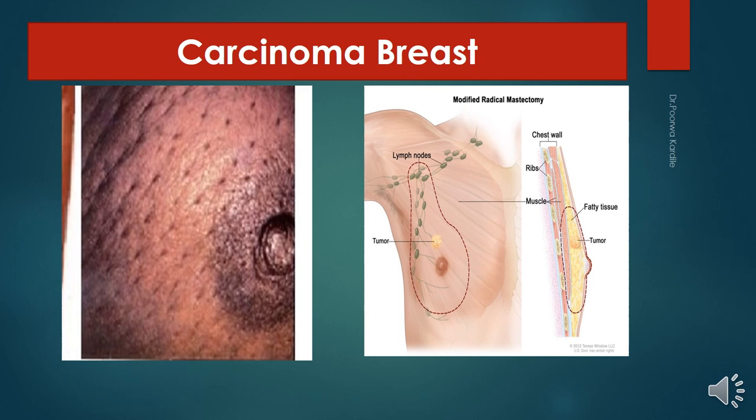Infiltration and fibrosis of lactiferous ducts causes the nipple to retract. Obstruction of superficial lymph vessels by cancer cells produces edema of the skin, giving rise to peau d'orange appearance. There is communication of superficial lymphatics of the breast across the midline.